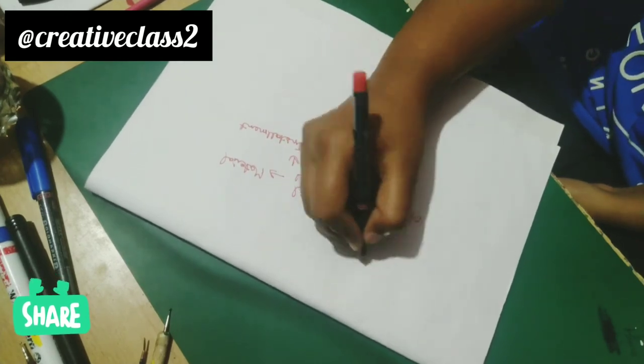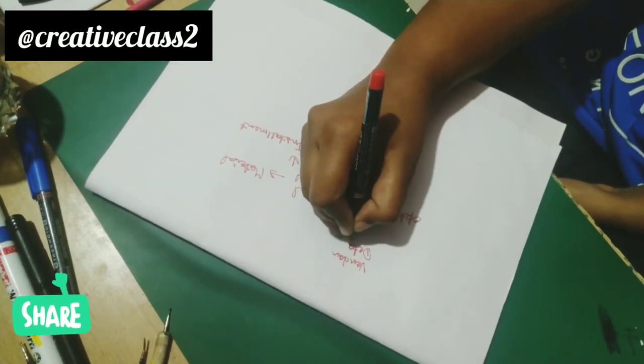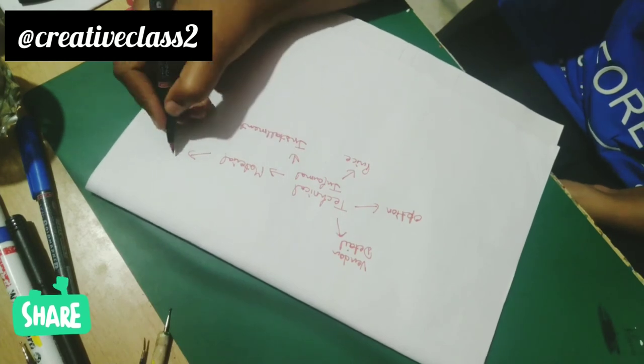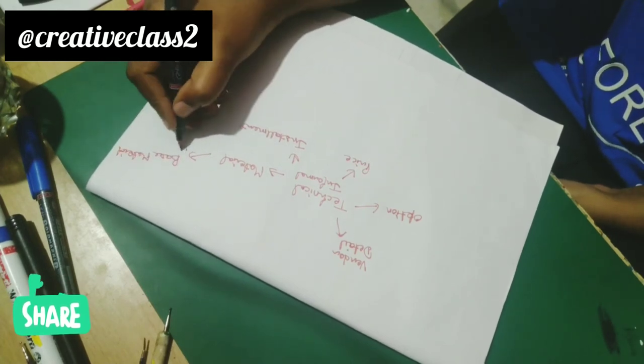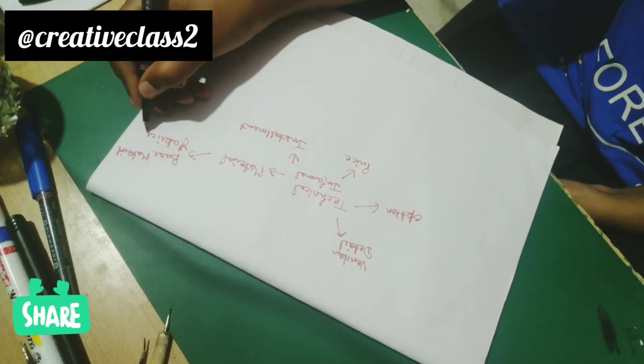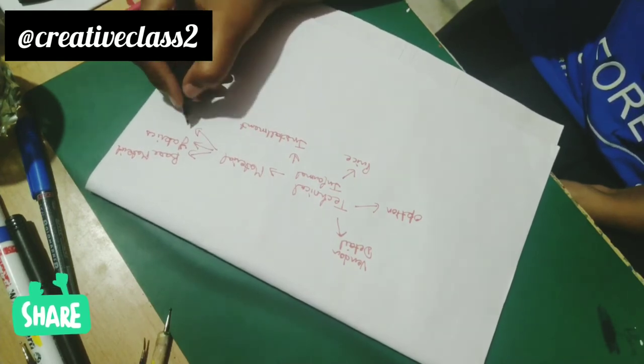price, option, vendor detail. These are the options in which I can talk about. So in material, I can talk about what is, talk about fabrics, paints, construction material, everything.